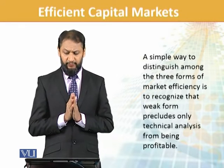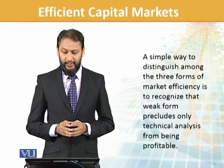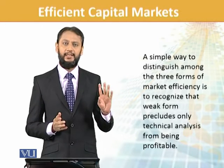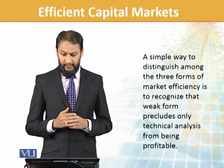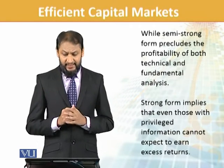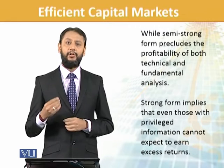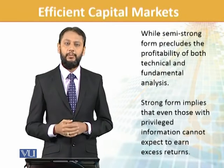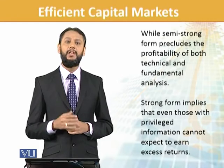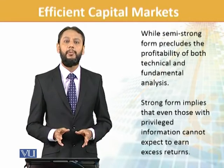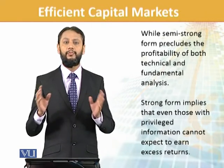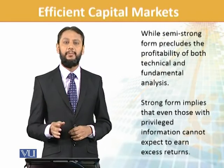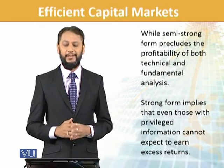A simple way to distinguish between the three forms: in weak form, technical analysts are out — they cannot earn abnormal profit. In semi-strong form, both technical and fundamental analysts are out. In strong form, even those with private insider information are out — in the ideal strong form, nobody can earn any abnormal profit.